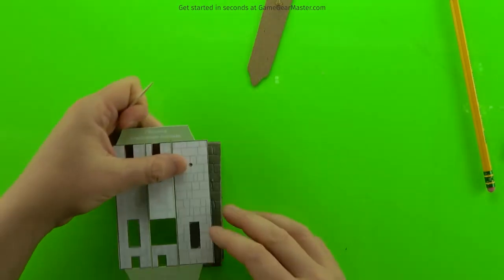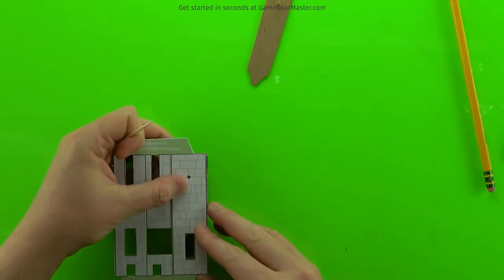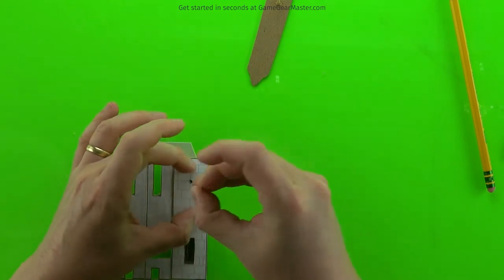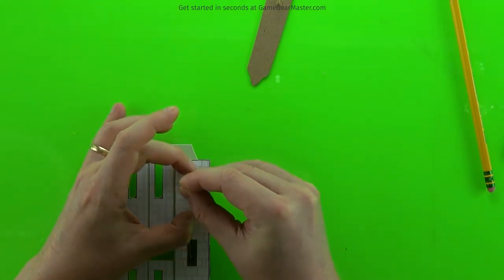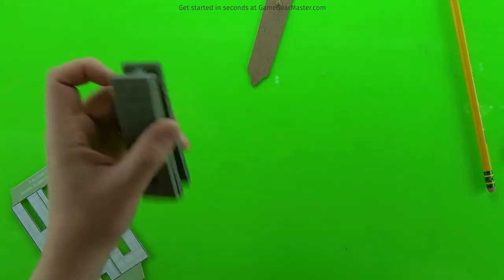And then while that's drying, I'm going to make the hole for the decorator in one of my connectors. You just do that by laying the template over the connector and then punching through it with the toothpick.